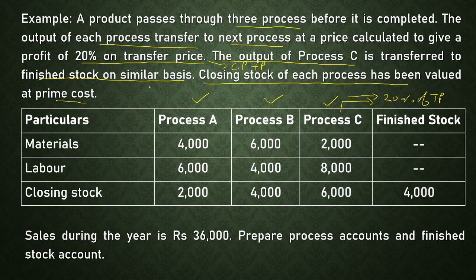The cost of closing stock is calculated on the basis of prime cost. The individual expenses related to the process accounts are: material costing ₹4,000 in Process A, ₹6,000 in Process B, and ₹2,000 in Process C. Labour cost: ₹6,000 in Process A, ₹4,000 in Process B, and ₹8,000 in Process C. Closing stock: ₹2,000 in Process A, ₹4,000 in Process B, ₹6,000 in Process C, and unsold goods in finished stock account of ₹4,000.